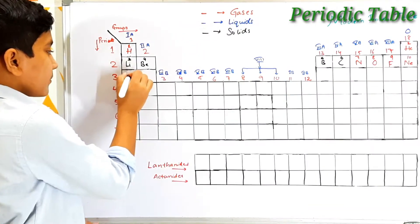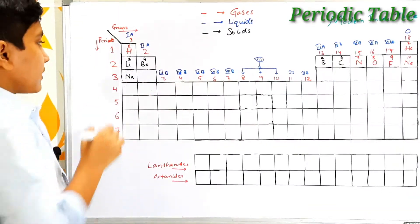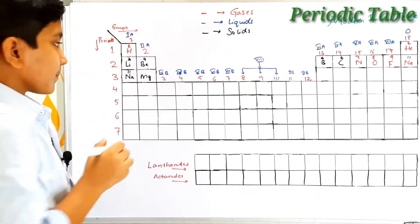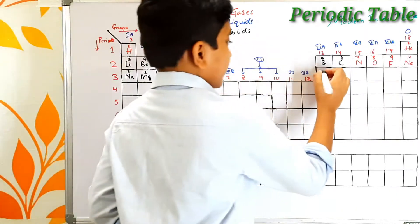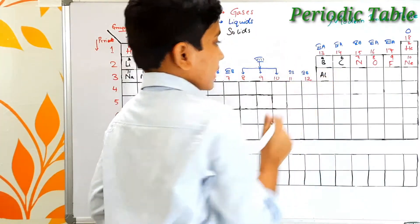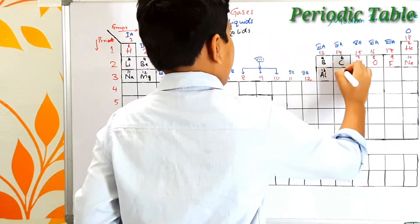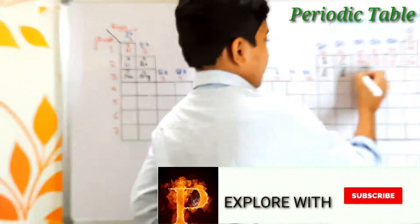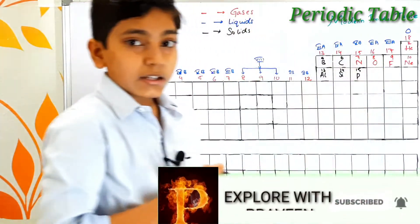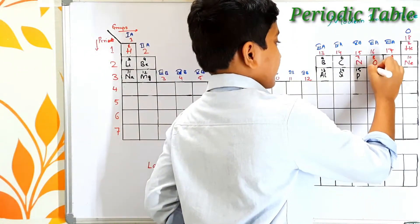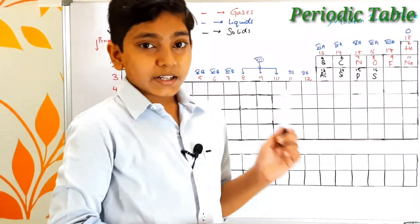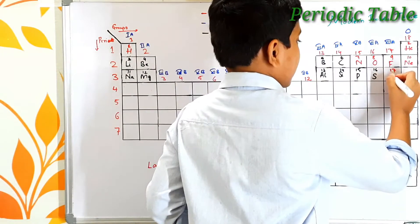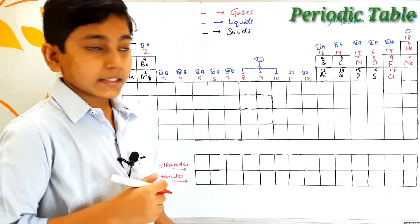The third period begins with sodium — its symbol is Na and its atomic number is 11. Next we find magnesium — its symbol is Mg and its atomic number is 12. Then aluminium with atomic number 13, silicon with atomic number 14, phosphorus with atomic number 15, sulfur with atomic number 16 and symbol S, chlorine with atomic number 17, and argon with atomic number 18.